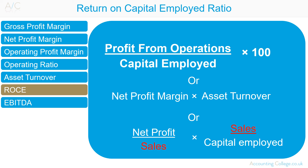Return on capital employed equals net profit margin multiplied by asset turnover. This relationship can be used in calculations. For example, if a business has a net profit margin of 5% and an asset turnover of 2, then the return on capital employed would be 10%. Any change in the return on capital employed figure can be explained by a change in net profit margin, a change in asset turnover, or a change in both. Return on capital employed should be compared with an organisation's previous year's results, any ROCE targets set, the cost of borrowing, or other companies in the same industry's ROCE results.